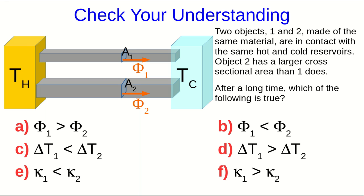I ended the previous part of this lecture with this question, so let's have a look at it. Notice that both objects are connected between the same hot and cold object. The left ends of both will end up at the temperature that I've called Th, and the right end of both will end up at the temperature that I've called Tc. And so the temperature difference across both of them will be the same, and so neither of C or D can be correct.